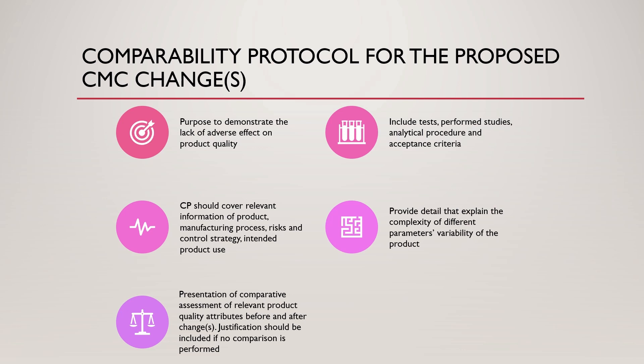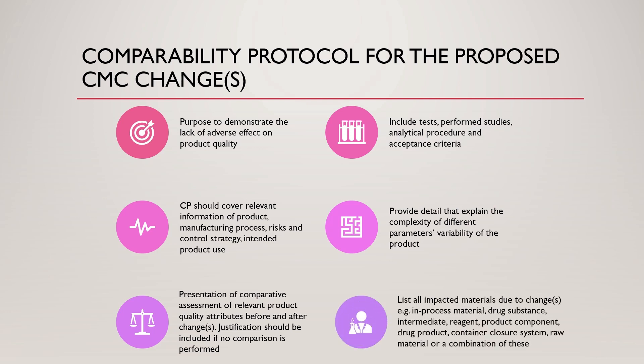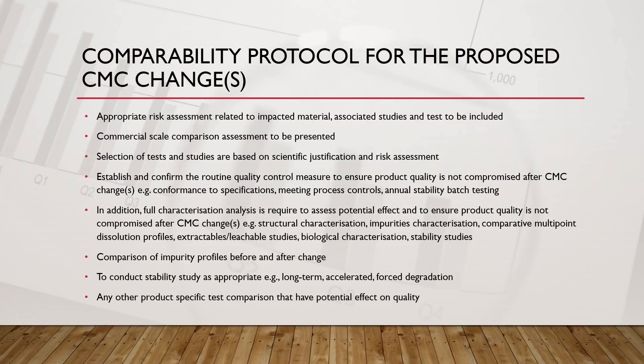The protocol should contain a presentation of comparative assessment of relevant product quality attributes before and after changes. A justification should be included if no comparison is performed. List all impacted materials due to changes, such as in-process material, drug substance, intermediate, reagent, product component, drug product, container closure system, raw material, or a combination of these. The comparability protocol should contain appropriate risk assessment related to impacted material and associated study and test.